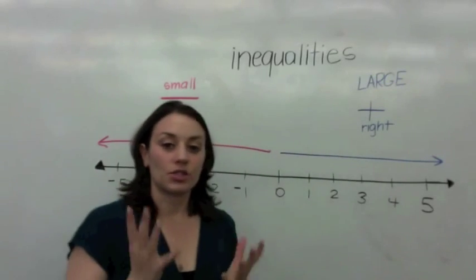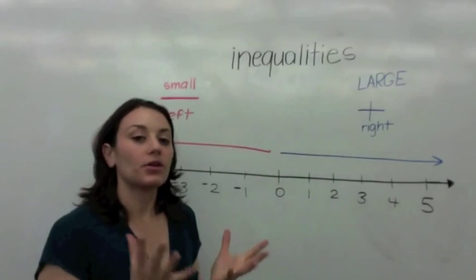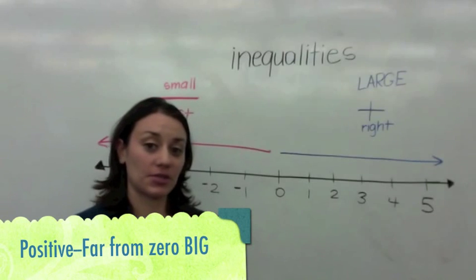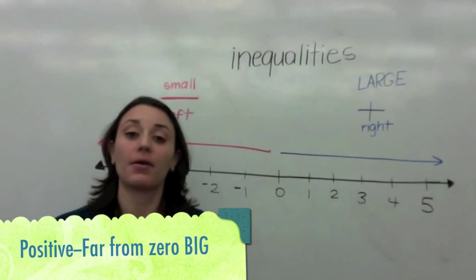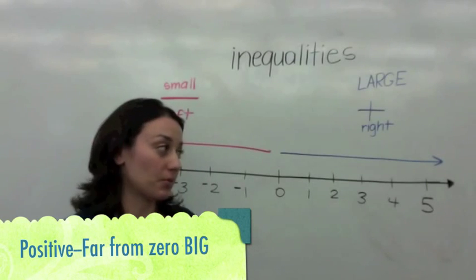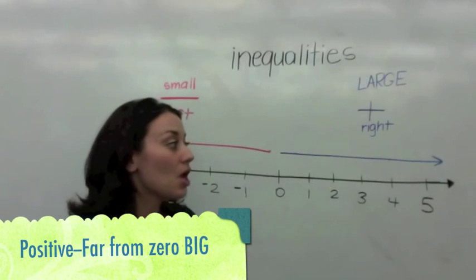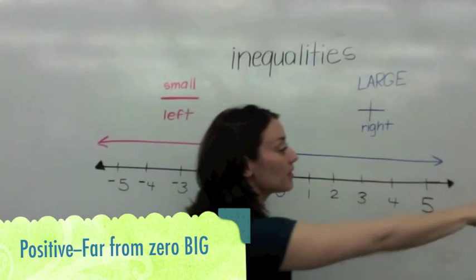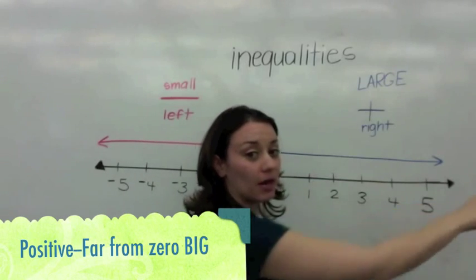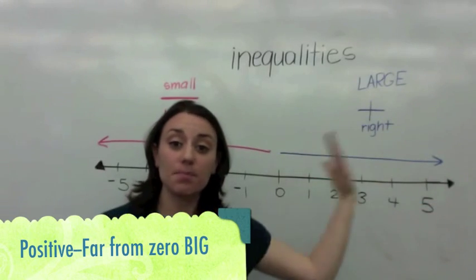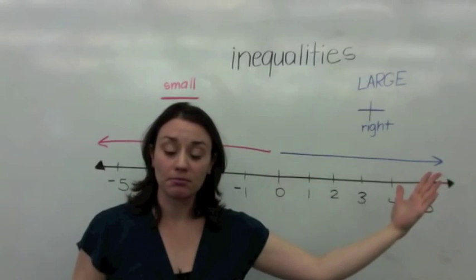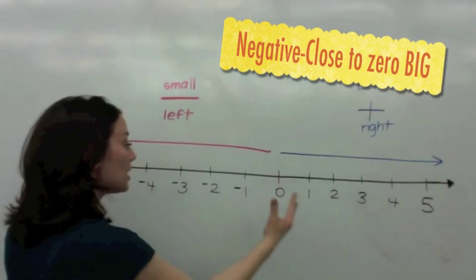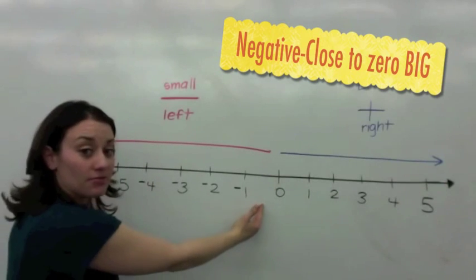So, when you're looking at positive numbers and comparing positive numbers, the one that is farthest from 0 is the biggest number. When you're looking at negative numbers,